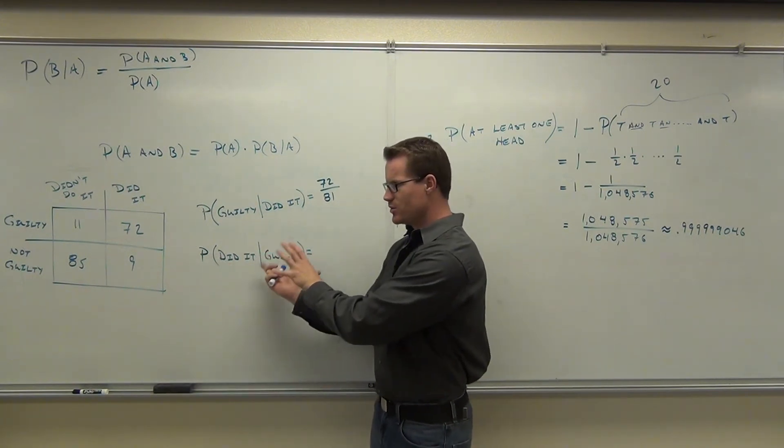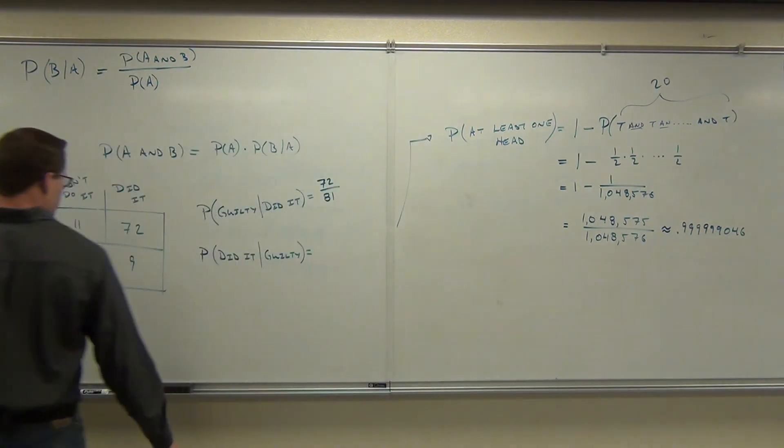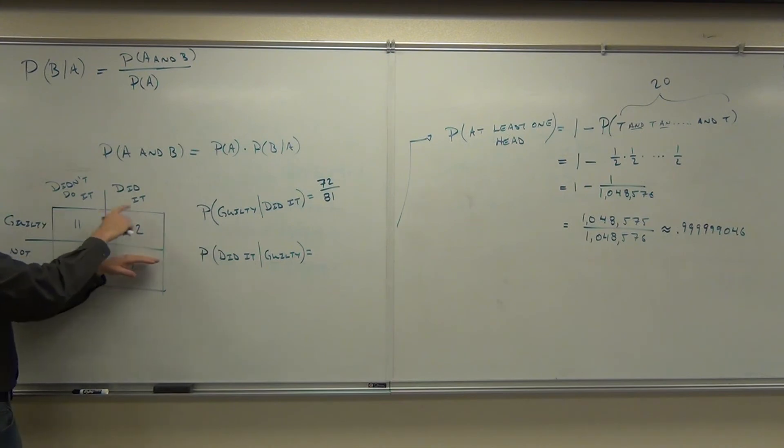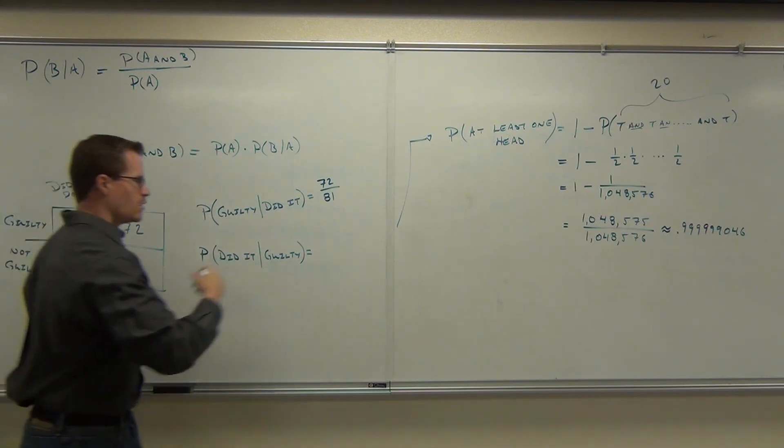So if they're guilty already, you know they were guilty. Right here, that tells us we're looking at this one. Did you look at this one? This row. So it says they're already guilty. Tell me what's the probability that they actually did it. How many people actually did it who were found guilty? 72 out of how many? Wait a second.